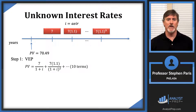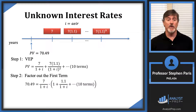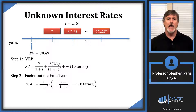Step 2: factor out the first term, and I'll also substitute 70.49 for the present value. So I get 70.49 equals 7 divided by (1+i), times the quantity 1 plus 1.1 over (1+i), and so forth. I check myself by distributing the 7/(1+i) across the parentheses and confirming I recover the original PV expression from Step 1.